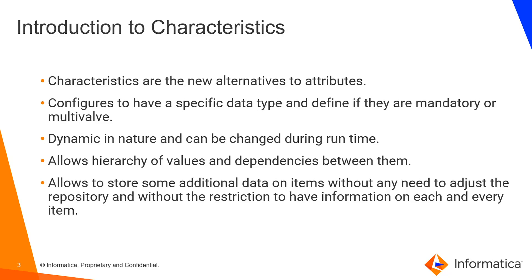Characteristics are alternatives to attributes. They were implemented from version A. Different data types can be configured using characteristics, such as text, lookups, logical keys, my value, decimal, etc. They are dynamic in nature and can be changed at any point at runtime in the UI. They also allow us to create hierarchies and parent-child relationships. Characteristics also have the feasibility to create additional data on items without any need to adjust the repository, or without the restriction to have information on each and every item.